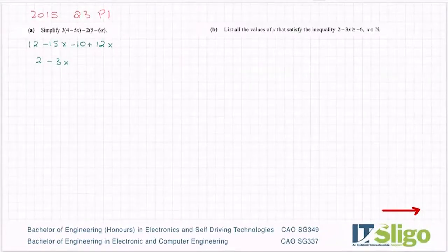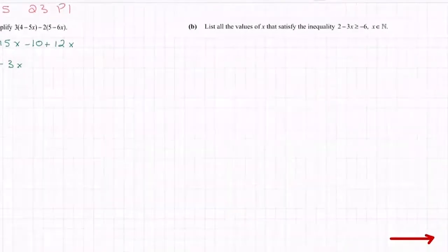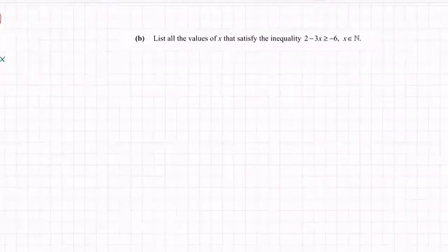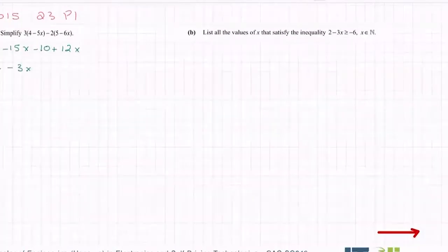So Part B for 2015, list all of the values of x that satisfy the inequality 2 minus 3x is greater than or equal to minus 6.